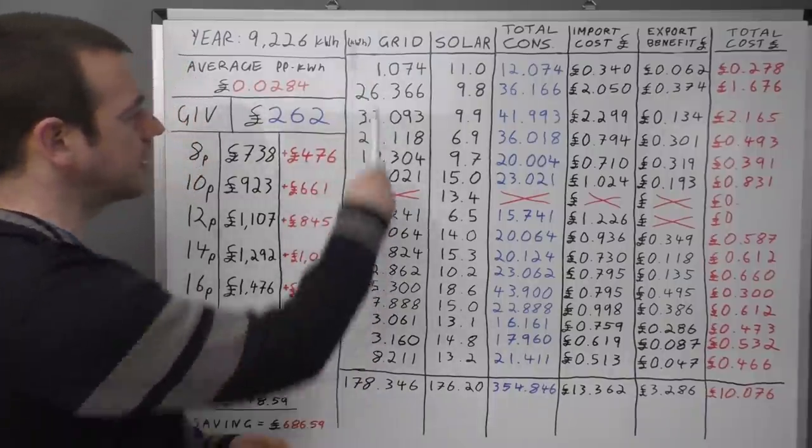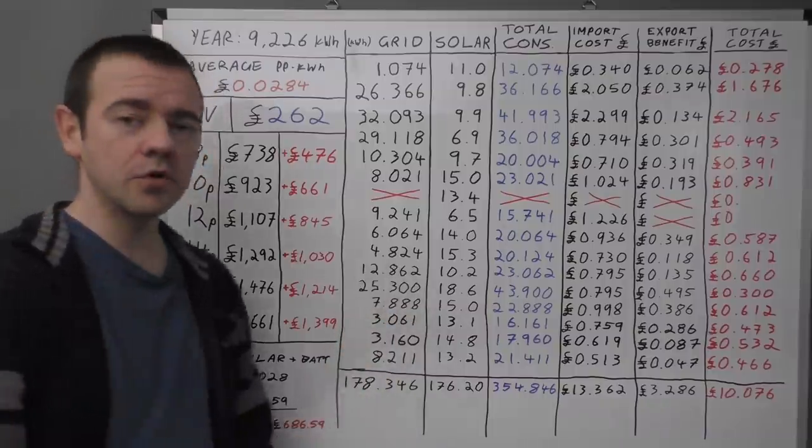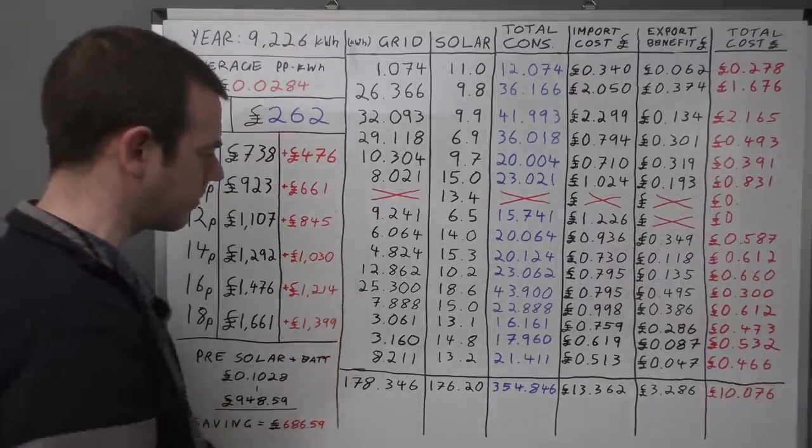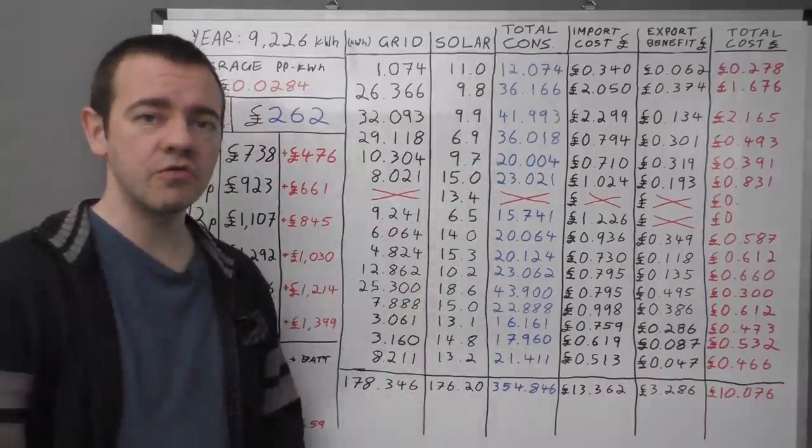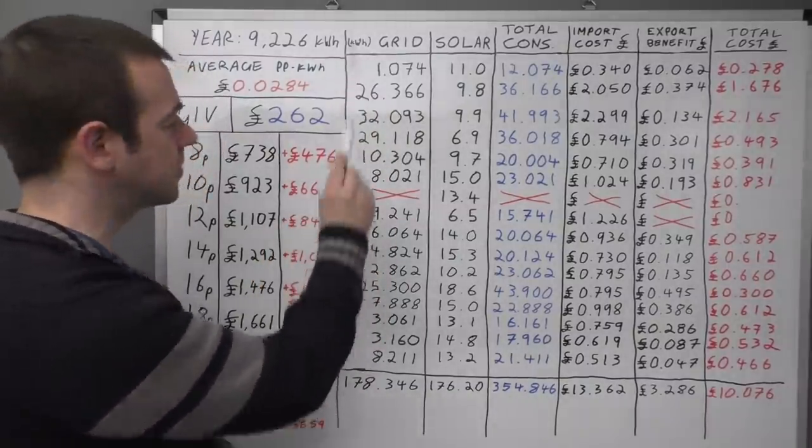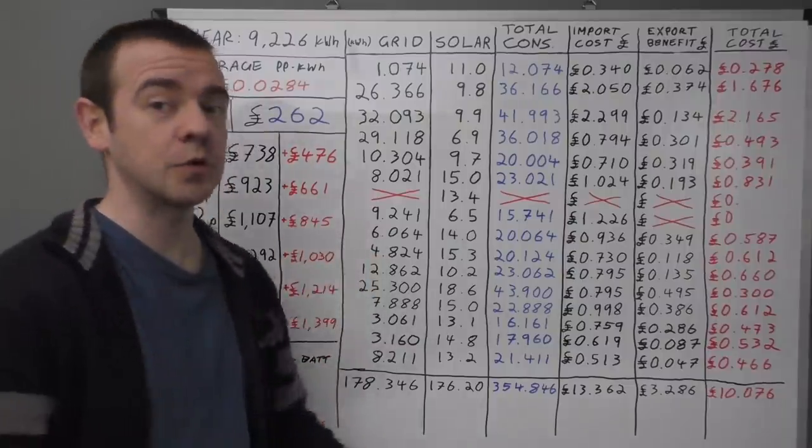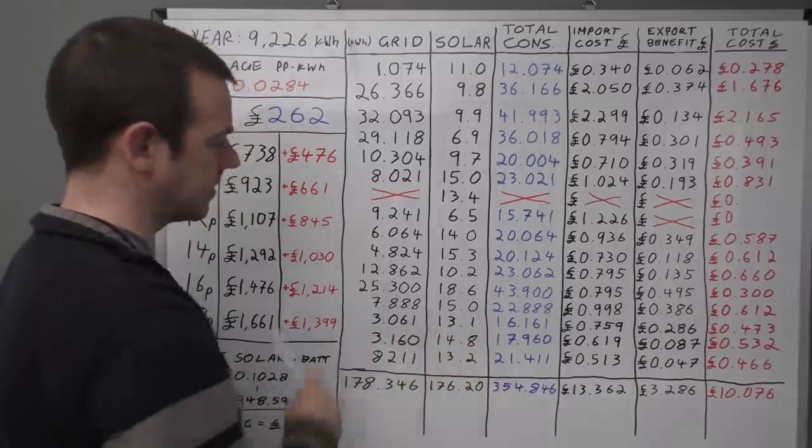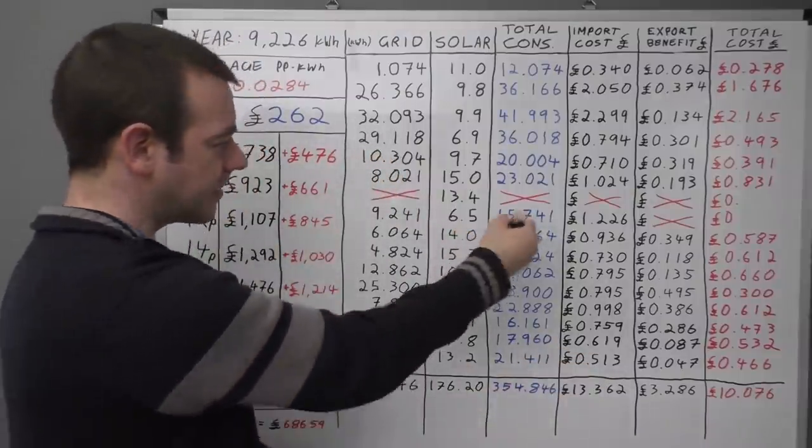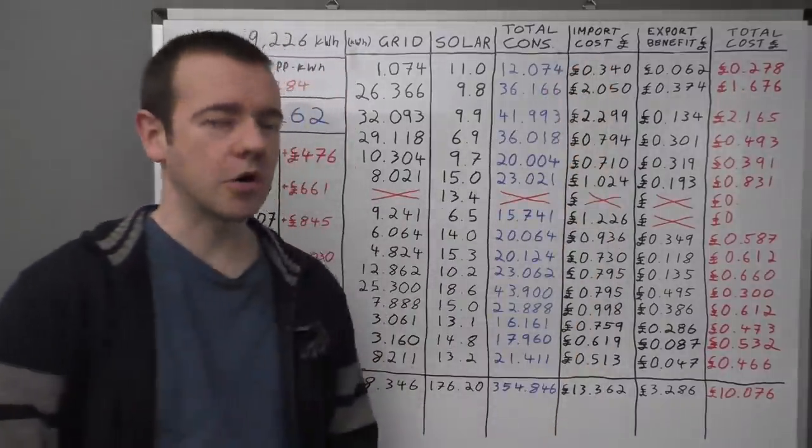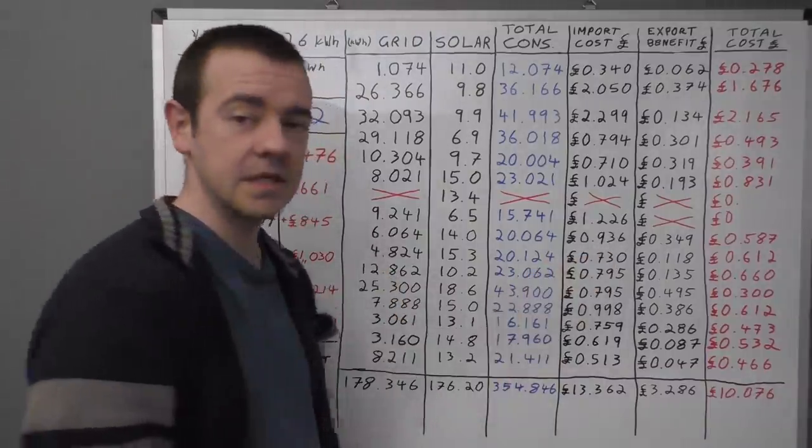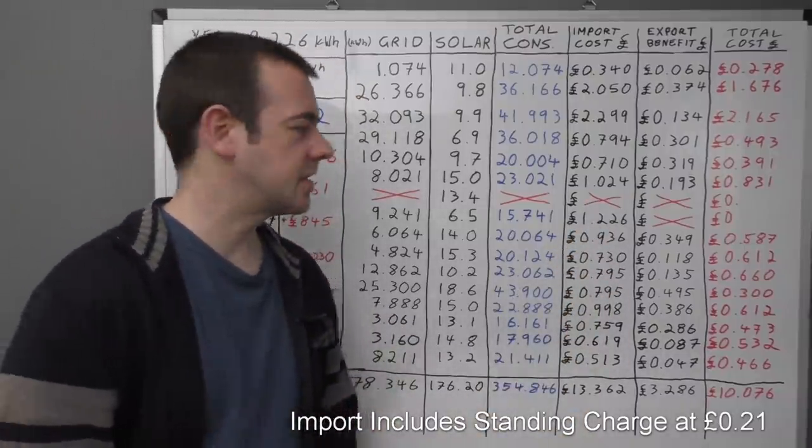I'll tell you what all these columns say individually. This is my grid consumption. So on each given day, that's how much I've taken from the grid itself in terms of kilowatt hours. I took 6.064 there, 25.3 there, and so forth. This is how much solar generation my panels have generated. This data comes from the smart meter, from Octopus themselves. So it's immensely accurate because that's what I'm getting billed from. This is just that and that, so that's my total consumption for the day. Had I had no battery and no solar, that consumption would still be the same. This here is the import cost.